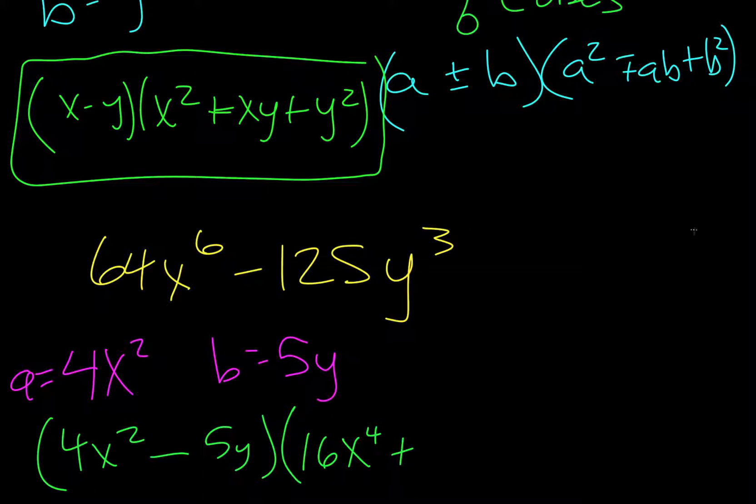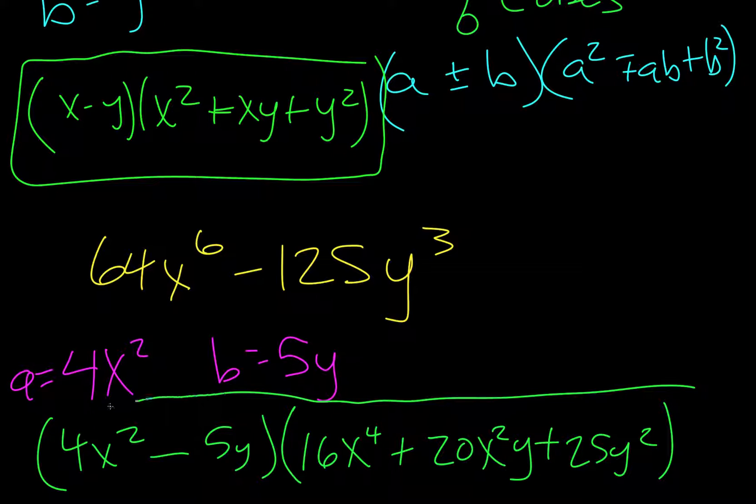Then we have to do a times b. So we're going to do 4 times 5, which is 20, and then x squared times y is just x squared y. This sign is always positive. And then we square b. So 25y squared. And that's everything.